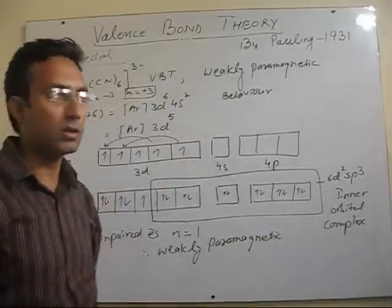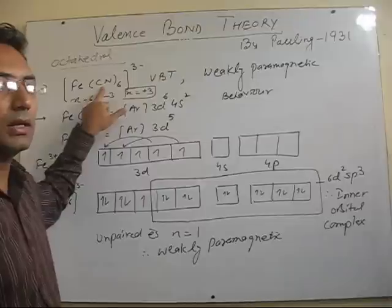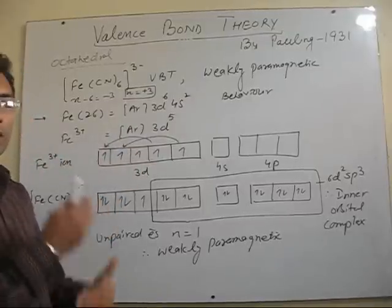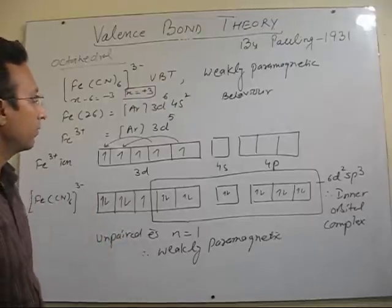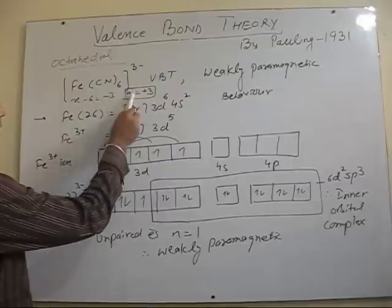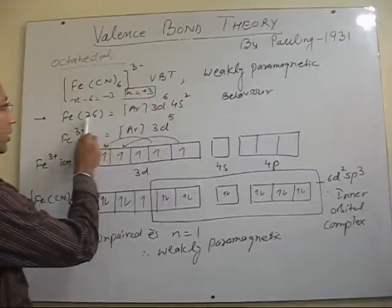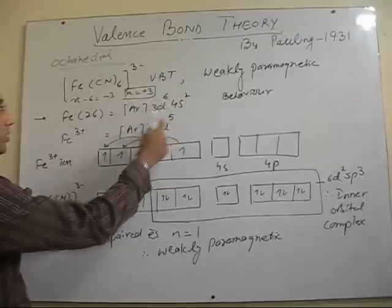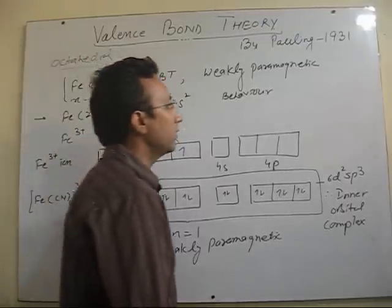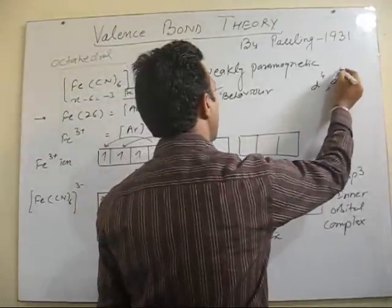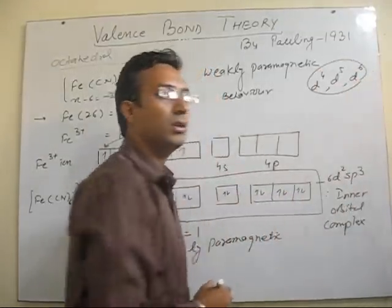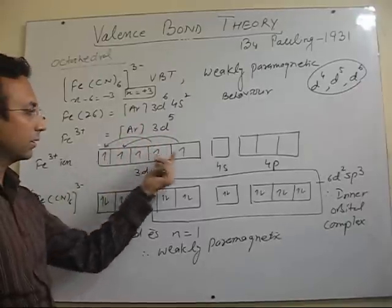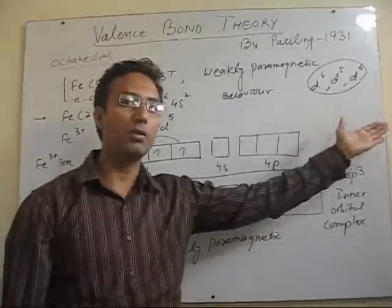Once we do the next advanced theory, by knowing the nature of the ligand we can also predict what type of bonding will be there — whether there will be pairing of electrons or electrons will remain unpaired. In this case the oxidation number is calculated as +3. So iron in its ground state has atomic number 26, and in +3 oxidation state the configuration is 3d⁵. For 3d⁴, 3d⁵, and 3d⁶ cases, it depends upon the nature of the ligand whether an inner or outer d orbital complex will be formed.